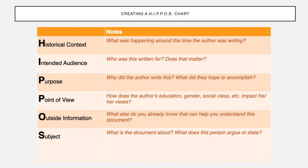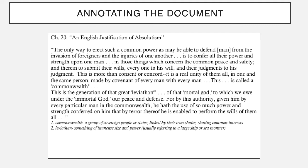We're going to practice with two documents. The first is an excerpt from Thomas Hobbes. The first thing I want to do is make a prediction based on the title, which says 'An English Justification of Absolutism.' I already know Hobbes believed in absolute power — absolute monarchy — so that's probably what absolutism is. He's from England. And justification — I think that means to give an excuse or a reason. When I used to miss school, the school would ask me to justify my absence. So justification means to give a reason.